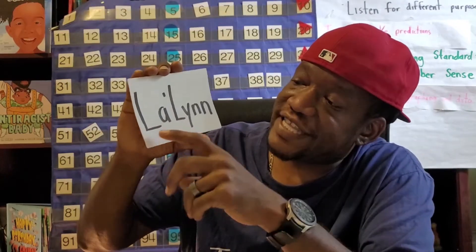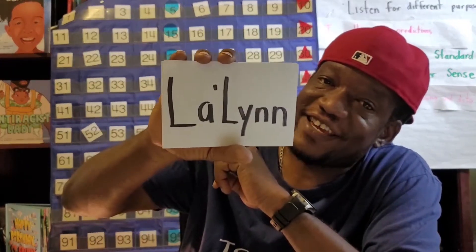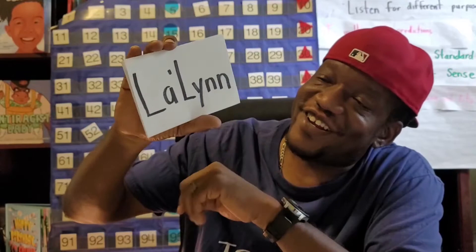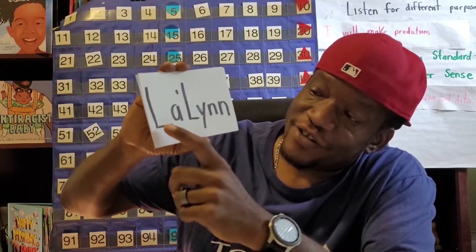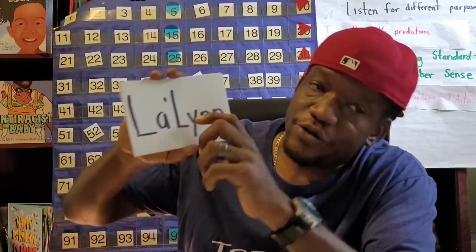This is Leilin. Let's count Leilin's letters. One, two, three, four, five, six. She has six letters in her name. Leilin has six letters in her name.